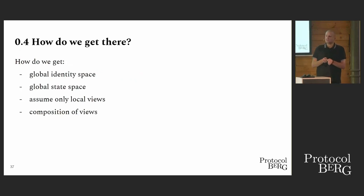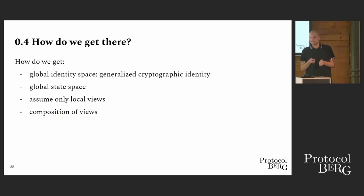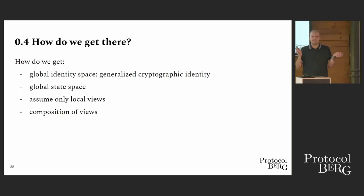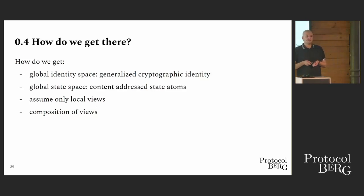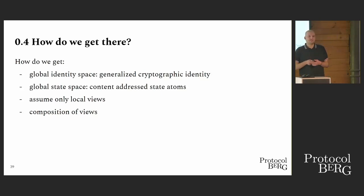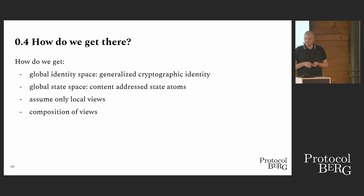How do we get a global identity space? We take generalized cryptographic identity — basically public-private key pairs, generalized. For a global state space, we can take content-addressed state atoms, like a UTXO that has a unique hash, a generalized UTXO whose hash is dependent on what the UTXO is and not something external.